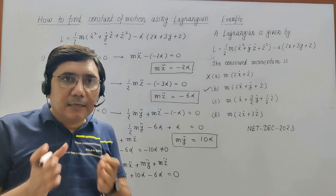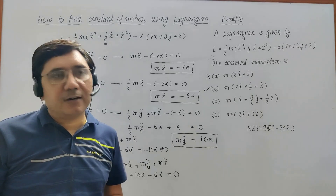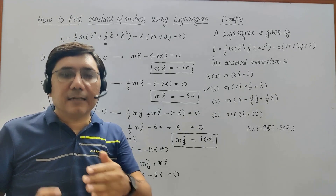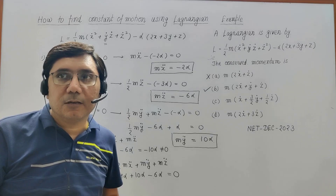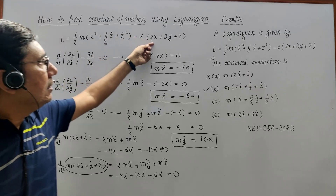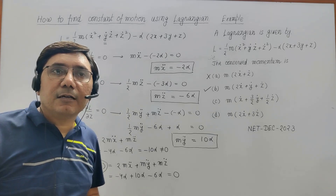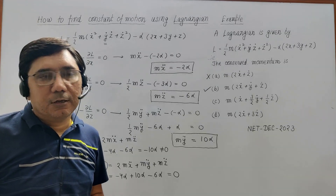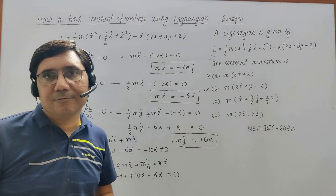So basically, when you are trying to find out the constant of motion, you are going to use two methods. First, go for cyclic coordinates — if cyclic coordinates exist, the corresponding generalized momentum will be a conserved quantity throughout the motion. Otherwise, write Lagrange's equation of motion for each generalized coordinate and by algebraic manipulation of those equations, find the quantity that remains conserved throughout the motion.